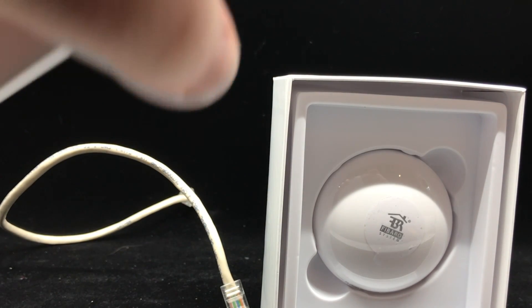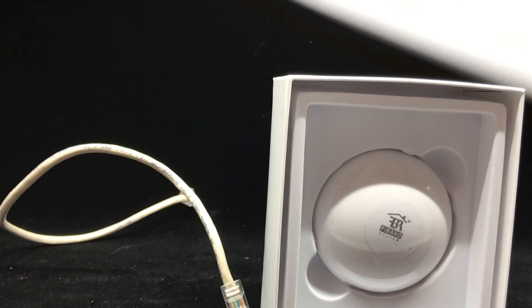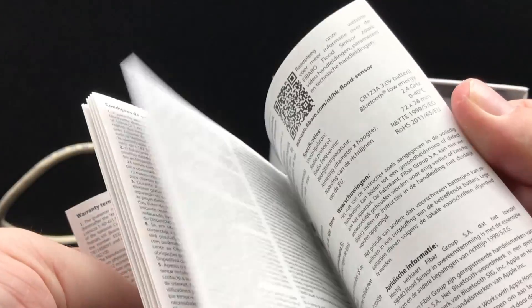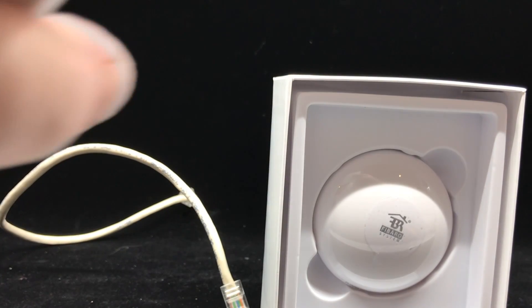So let's get into this. You can see we've got the box here, the instructions, the Fibaro sensor, the instruction booklets. And one thing that I did notice here is that I didn't see in here anything about being able to attach leads. This wasn't actually in the instructions.